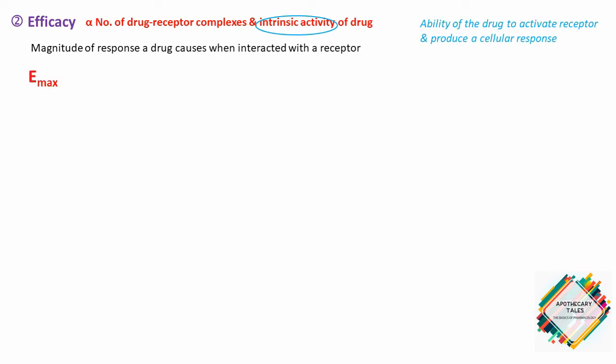The maximal efficacy of a drug, Emax, assumes that all receptors are occupied by the drug and no increase in response is observed even if a higher concentration is given. The maximal response differs between full and partial agonists even when 100% of receptors are occupied. Similarly, even though an antagonist occupies 100% of receptor sites, no receptor activation results and Emax is zero. Efficacy is more clinically useful than potency since a drug with greater efficacy is more therapeutically beneficial.